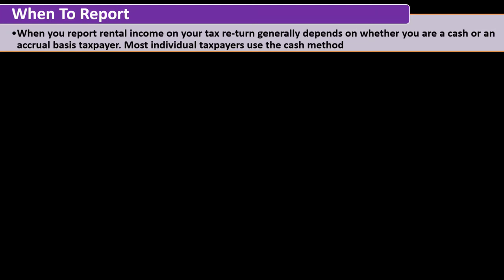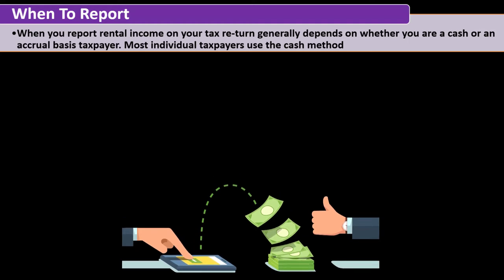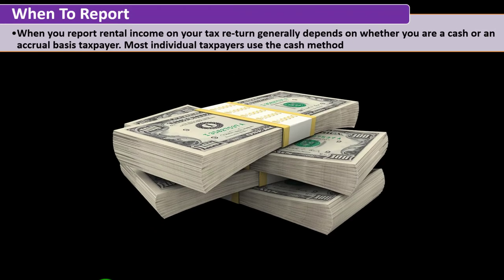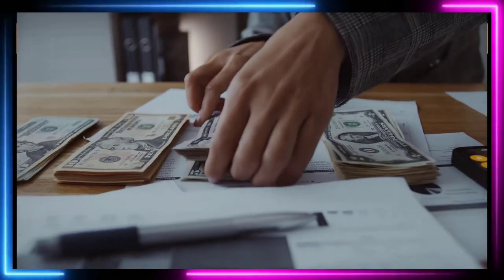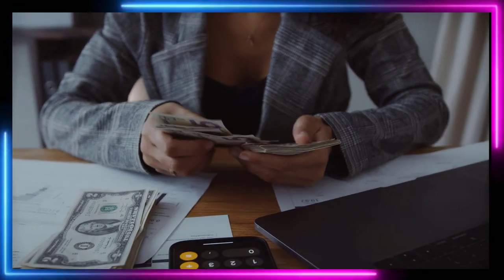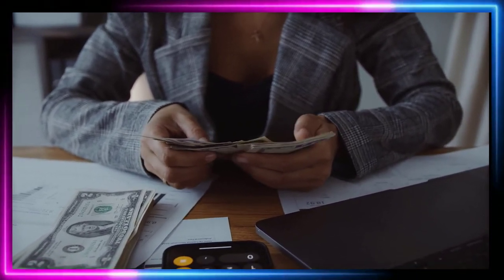Cash and accrual are accounting and business terms. Most individual taxpayers use the cash basis method — meaning you record expenses when cash goes out and revenue when cash is received. For businesses, the larger the business, the more likely you might move from a cash basis to an accrual basis, as some businesses are required to use accrual.